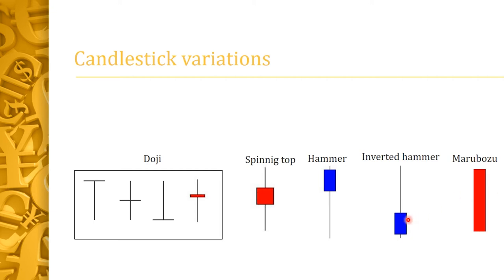The next one is the inverted hammer — it's the opposite of the usual hammer and follows the same rules. The wick has to be twice the size of the real body, but the wick is on the upside. It usually has minimal or no wick to the downside. That is the inverted hammer.